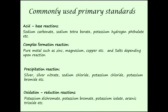One thing we should remember: in practice, an ideal primary standard is difficult to obtain, and we have to compromise the compound with ideal requirements. Basically, we have to compromise on purity, because we cannot obtain a compound of 100% purity — it is next to impossible. By compromising some parameters, we select a compound that almost meets those criteria and can be used as a primary standard.